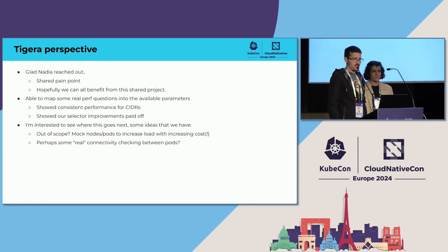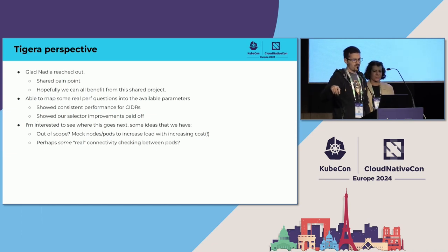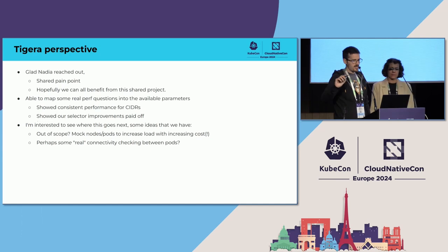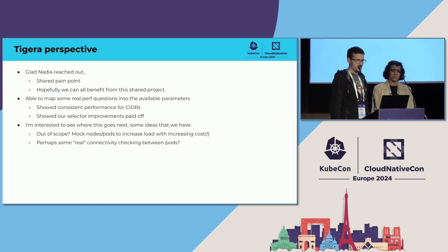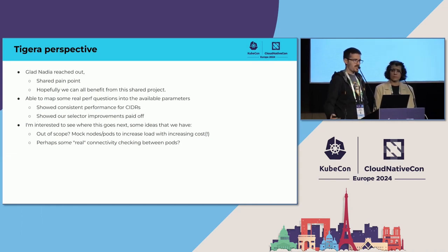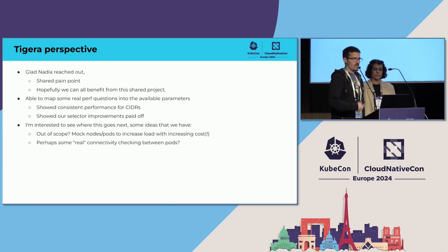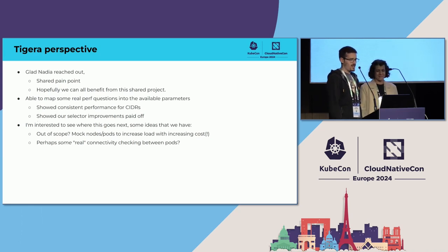I'm interested to see where it goes next. Maybe a little out of scope for this, but we'd quite like to figure out a way to do higher scale testing with mock nodes. We've been experimenting with that internally. It'd be quite nice to have some real connectivity checking on top of the convergence stuff — just to make sure it's really doing what we want it to do. But yeah, we've enjoyed contributing.